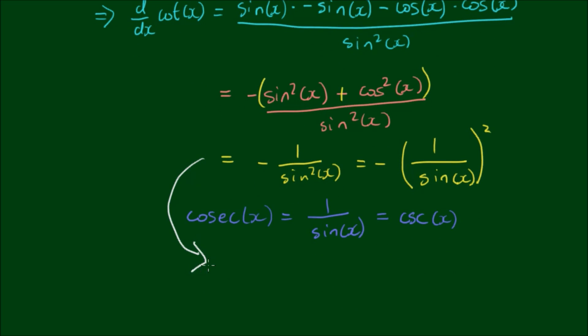So finally, the derivative of the cotangent of x is equal to negative of the cosecant of x all squared. And we can rewrite that as negative csc squared of x.